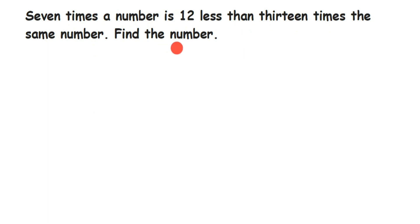We don't know what the number is — it's unknown to us. Whenever we have to find an unknown number, we assume it to be x. You can take any variable. So here, let the number be x.